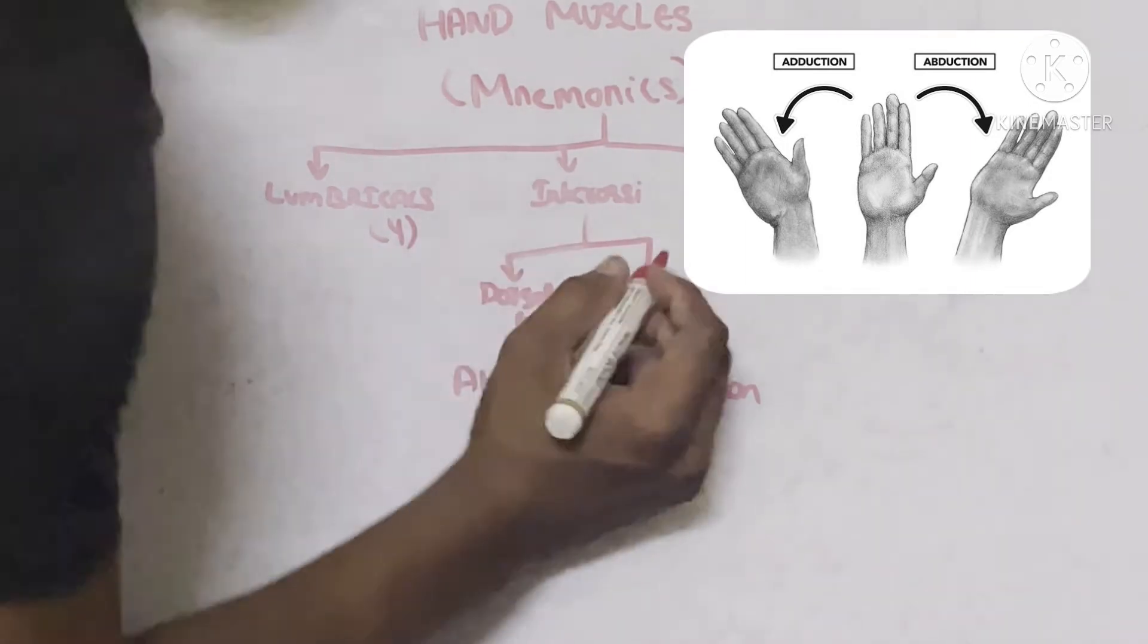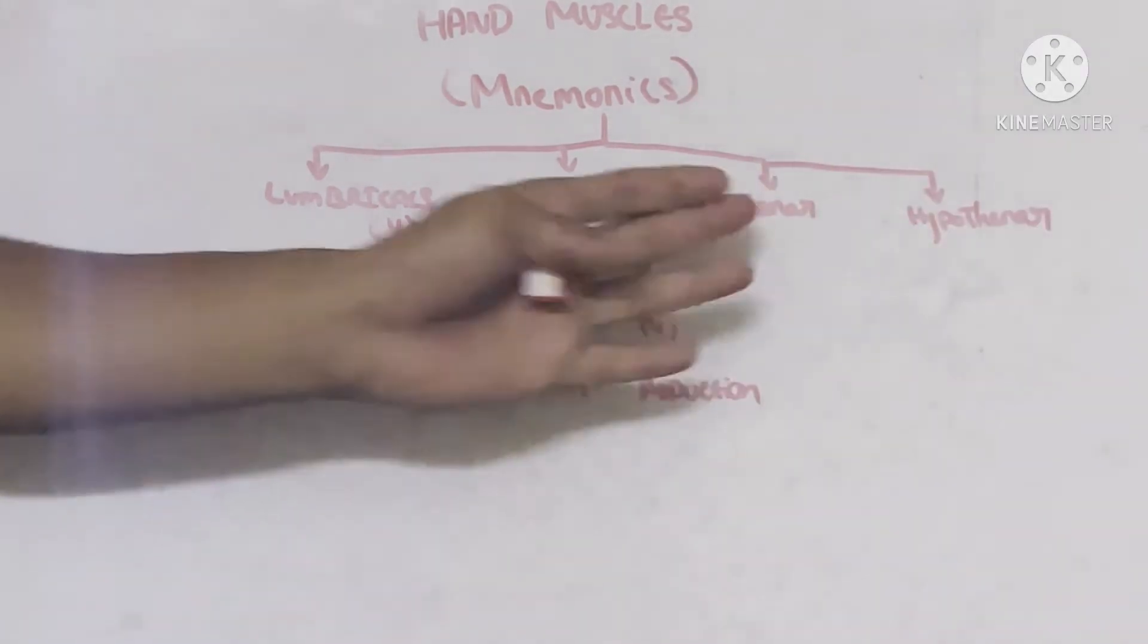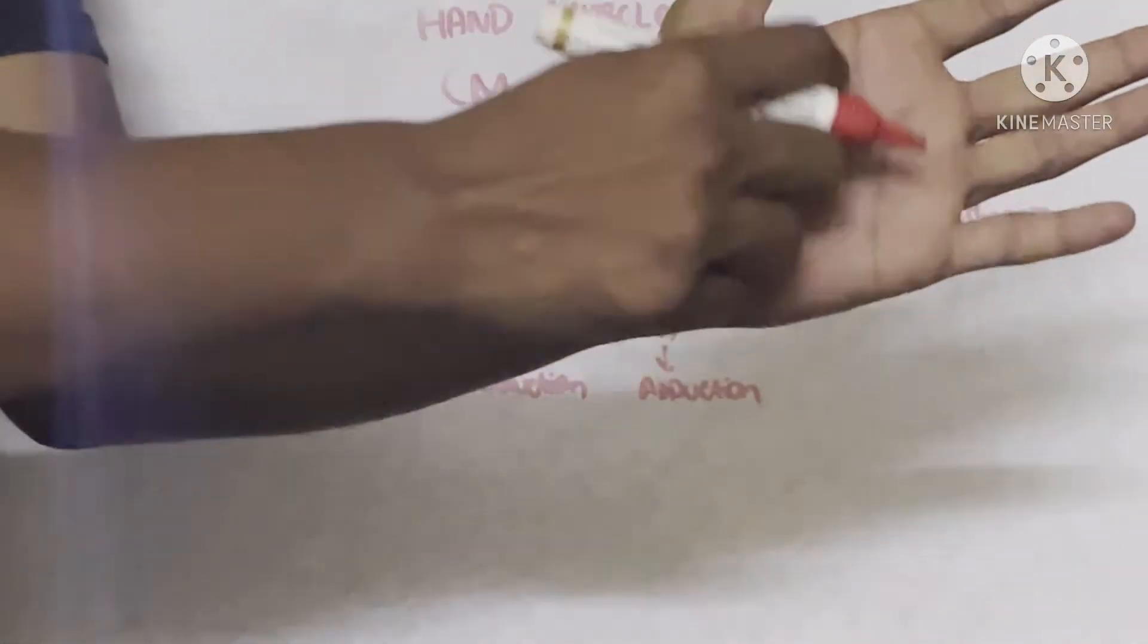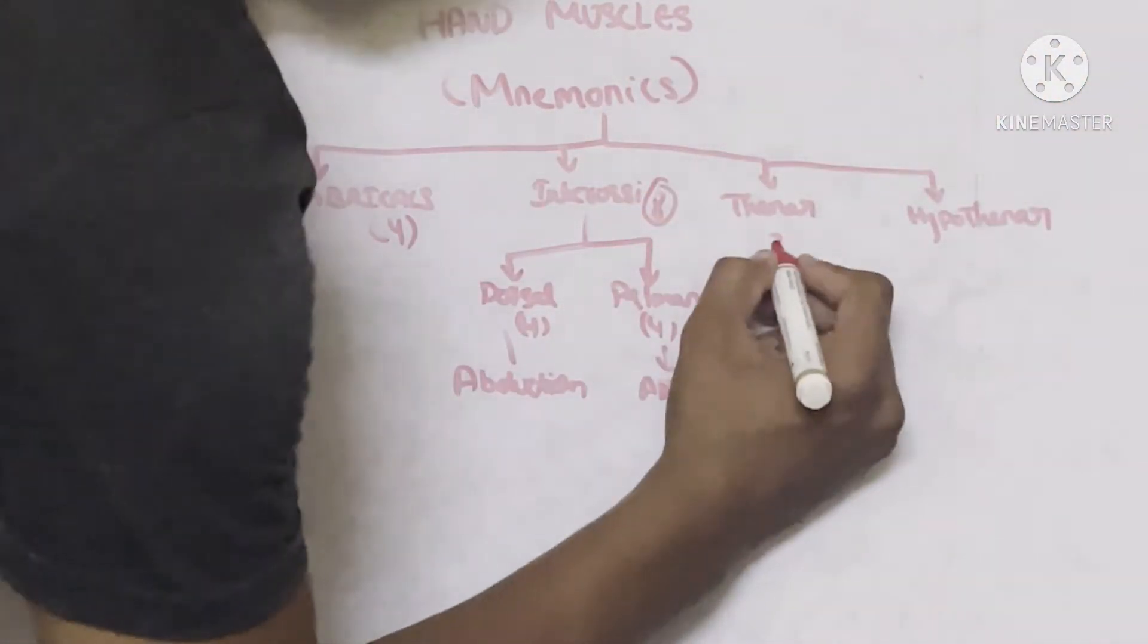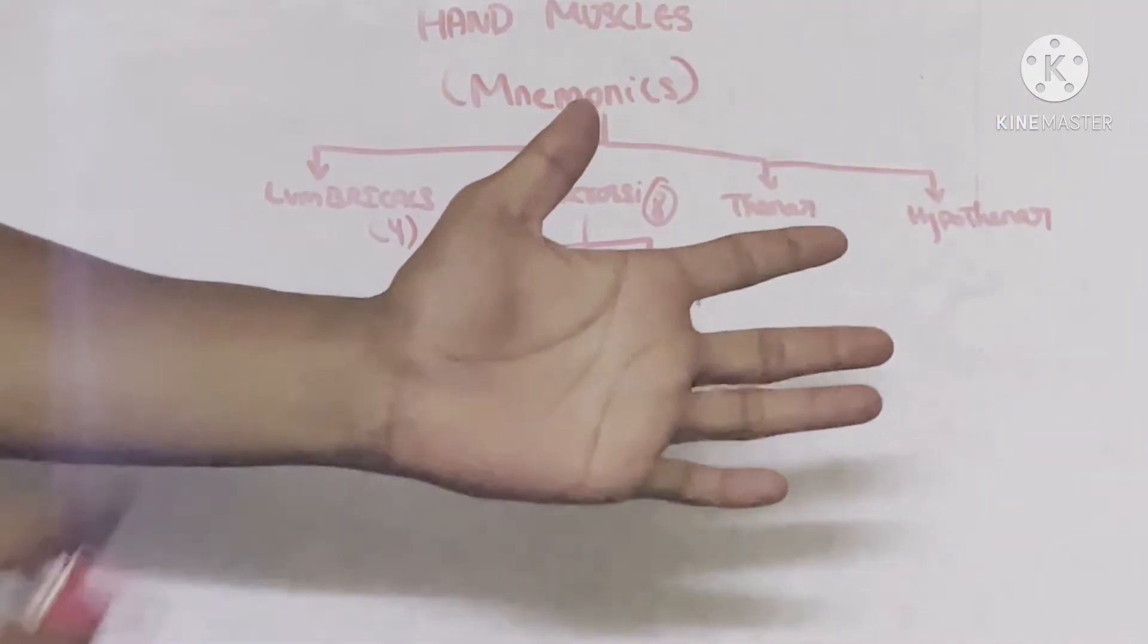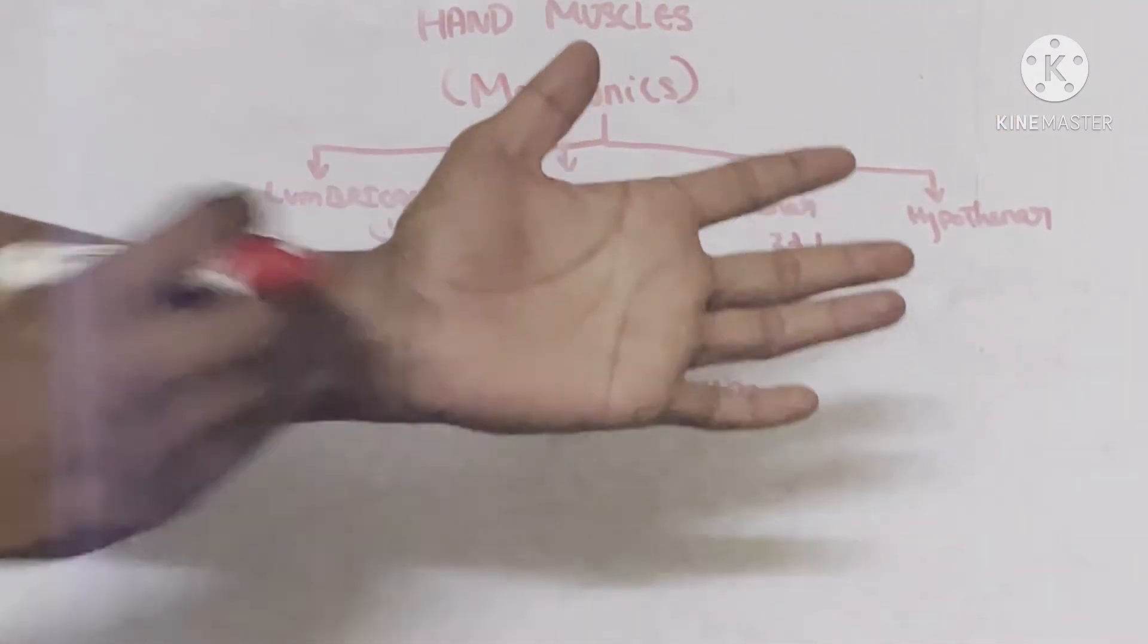So totally we have eight muscles on interossei. If we move on to thenar, thenar muscles are the muscles present below the thumb finger. It has almost three plus one. Why I call three plus one is three muscles present between this gap and one muscle associated excluding this gap.